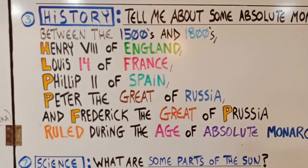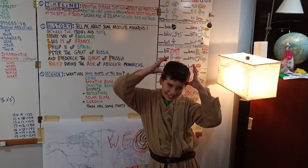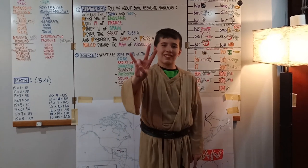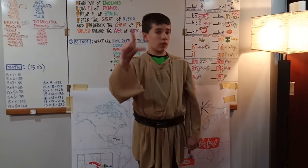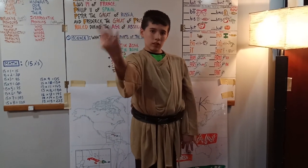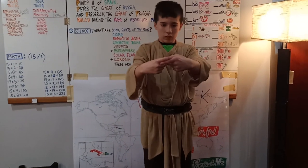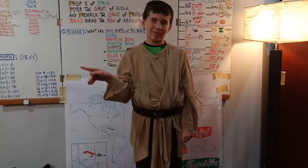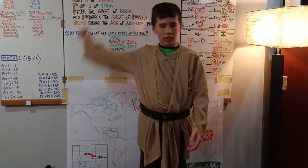And for history, this week is: tell me about absolute monarchs. So we'll do 1500s — that's five twice. 1800s — we make an eight. Then H for Henry of England, and we're going to rest on our cane. Make an L for Louis XIV of France — flash four, make the sign for France. Then make a P for Philip the Second of Spain — that's the sign for Spain. Then we have Peter — make a P — and the sign for Great of Russia. And then we have Frederick — make an F — Frederick the Great of Prussia. And we grab our beard for the age of absolute monarchs.